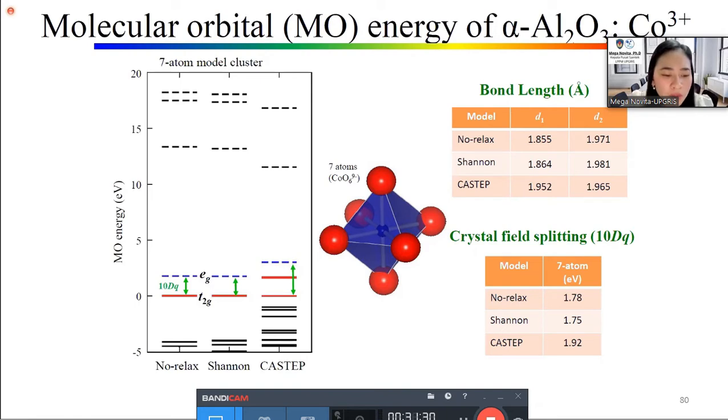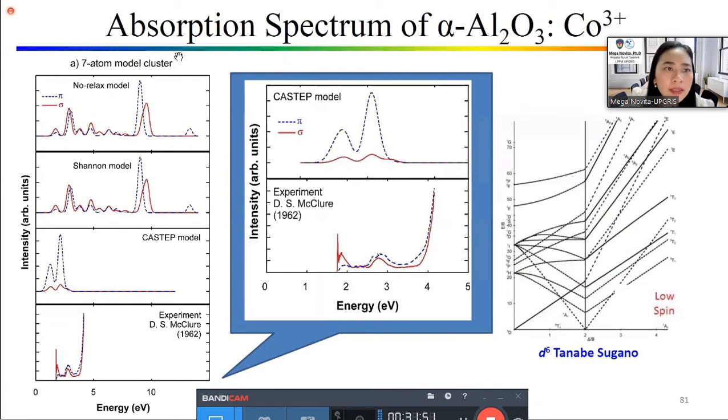And this one is the result for the molecular orbital energy of alpha-alumina doped with cobalt 3+. The picture here, we compare non-relaxation, Shannon, and CASTEP again. It increases in the order of non-relaxation, Shannon, and also CASTEP. We just constructed using seven atoms only. Okay. And here are the absorption spectrum of alpha-alumina doped with cobalt 3+. For non-relaxation, we show here many peaks. Shannon also shows many peaks here. But CASTEP model, we show only two peaks here. Experimental also shows only two peaks. However, in our calculation, once again, we just use low-spin state, but the experimental data we have for high-spin state. So actually, they cannot be compared.